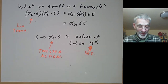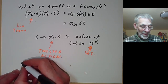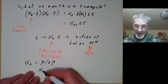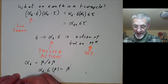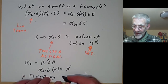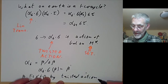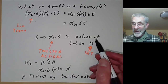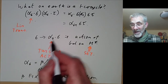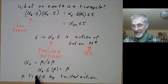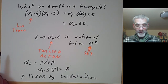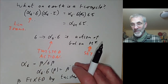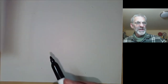The condition for being a coboundary — alpha_sigma = beta/sigma(beta) — means alpha_sigma · sigma(beta) = beta, i.e., beta is a fixed point of this twisted action. If the action preserved the group structure of M*, a fixed point would be trivial (just the identity). What this says is that if the cocycle is a coboundary, the twisted action still has a fixed point, even if it's not the identity element. With this interpretation, Noether's theorem is almost trivial to prove.